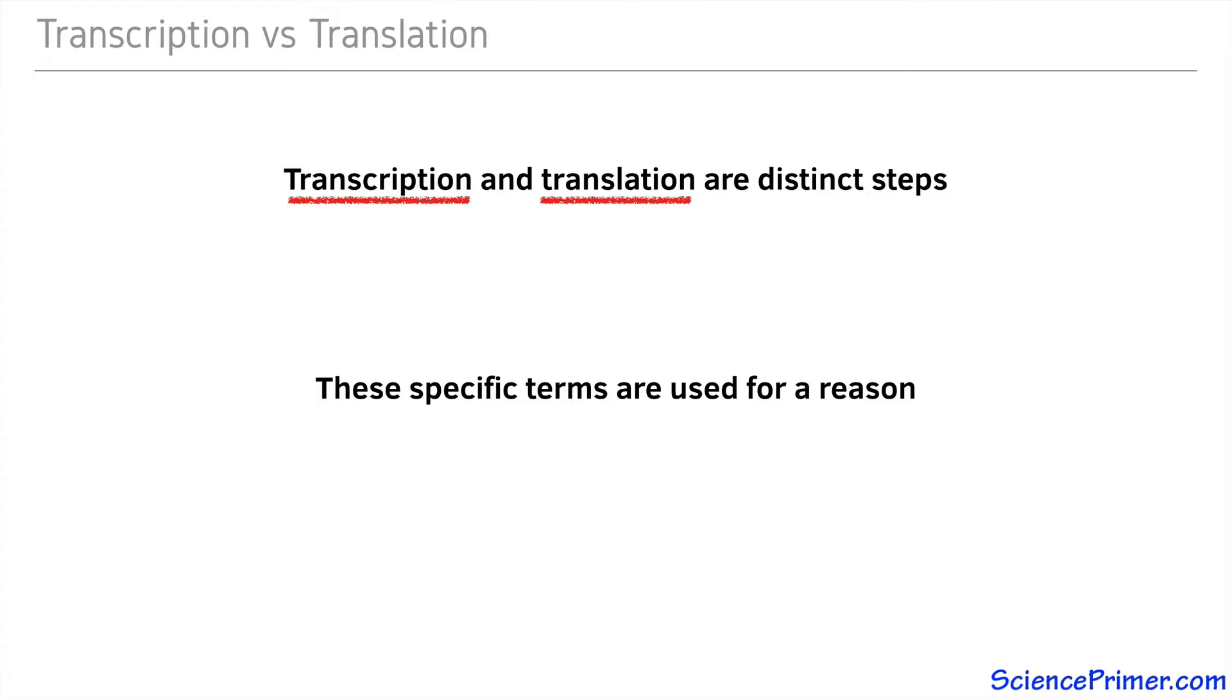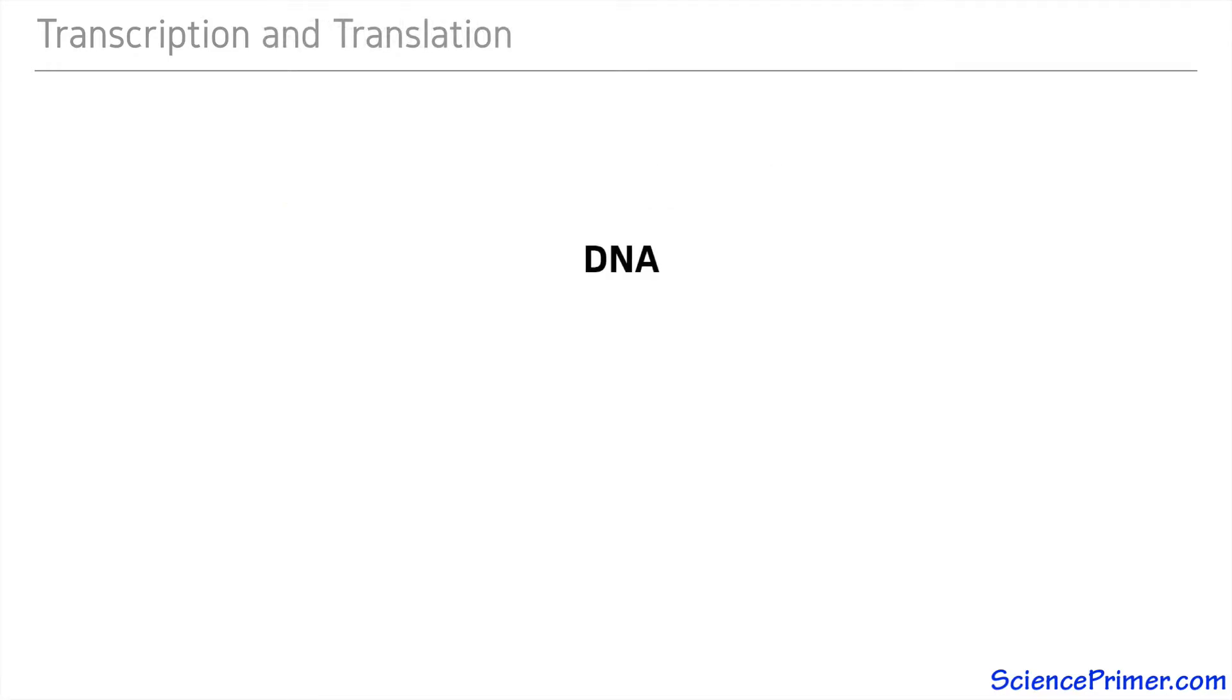In order to be used by the cell, the information carried in the sequence of bases in the cell's DNA needs to be read in a way that results in the synthesis of the necessary proteins. This information is not transferred directly from DNA to protein. Two steps are required.